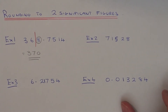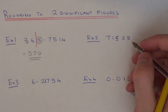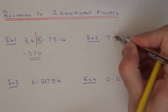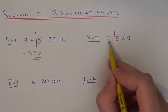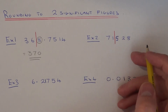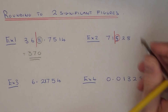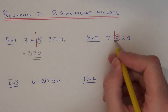So let's look at example two. This time we've got 71,528, and again I need to round it to two significant figures — that's two non-zero digits from the start of the number. So there are two possible answers: it will either be 71,000 if I round the number down, or 72,000 if I round the number up. We just need to look at the digit after the line, which is five. Since that is five or above, the answer is closer to 72,000.